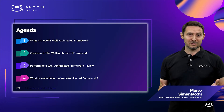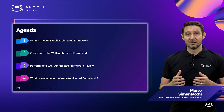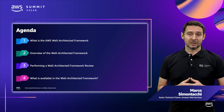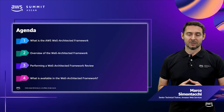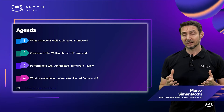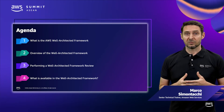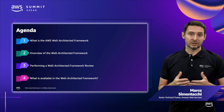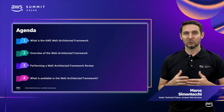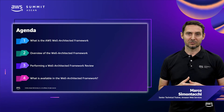Let's see what is the agenda for the session. First, I will explain what is the AWS Well-Architected Framework. Next, we will take an overview of the Well-Architected Framework. We will also take a look at performing a Well-Architected Review. Finally, we will look into what is available in the Well-Architected Framework.